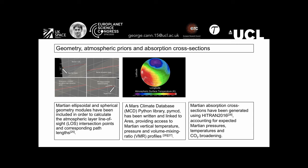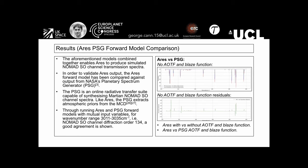Here we consider the geometry, atmospheric priors, and absorption cross-sections that have been used in the ARIES model. Martian ellipsoidal and spherical geometry modules have been included and they calculate the line of sight intersection points between atmospheric layers. These path lengths are used in the radiative transfer calculations. A Mars Climate Database Python library has been written and linked to ARIES. This provides access to Martian vertical temperature, pressure and volume mixing ratio profiles. Martian absorption cross-sections have been generated using HITRAN 2016, accounting for expected Martian pressures, temperatures and CO2 broadening.